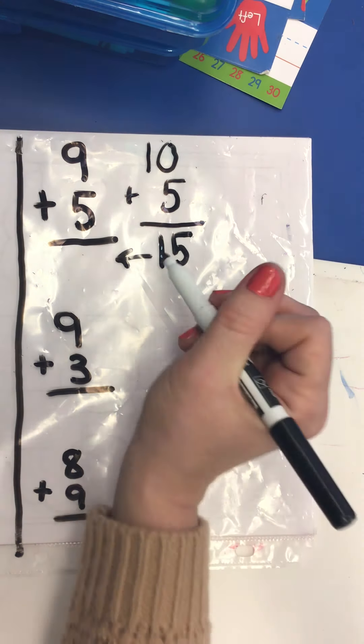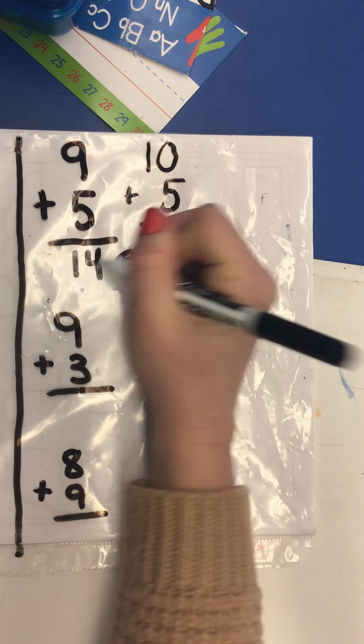So what's 15 if I were to hop back one? And you can use your number line if you need to. 15, hop back one is 14.